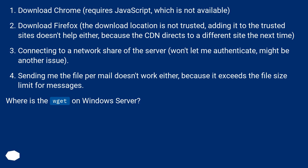Connecting to a network share of the server won't let me authenticate — might be another issue. Sending me the file per email doesn't work either, because it exceeds the file size limit for messages. Where is the wget on Windows Server?